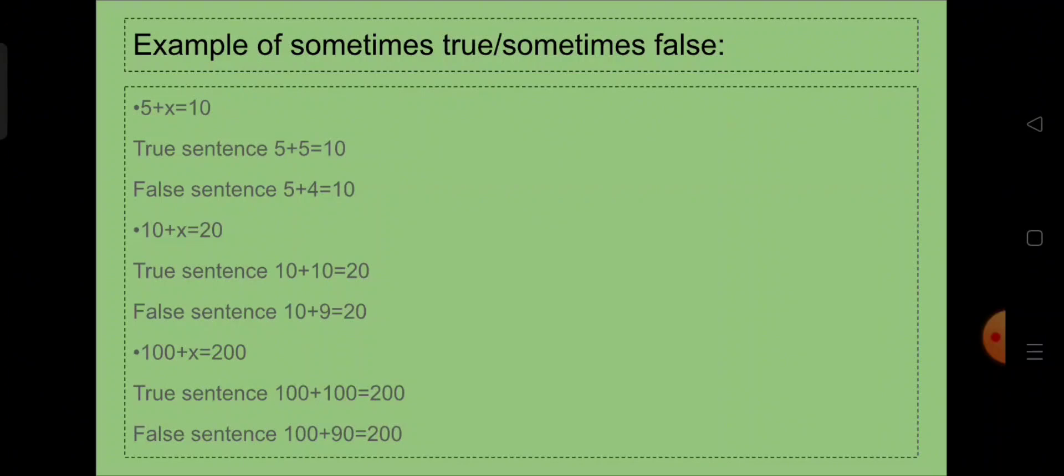Now to make it a false sentence, we have to change the value of x to 4 to make it a false sentence. 5 plus 4 equals 10. So that's a false sentence.